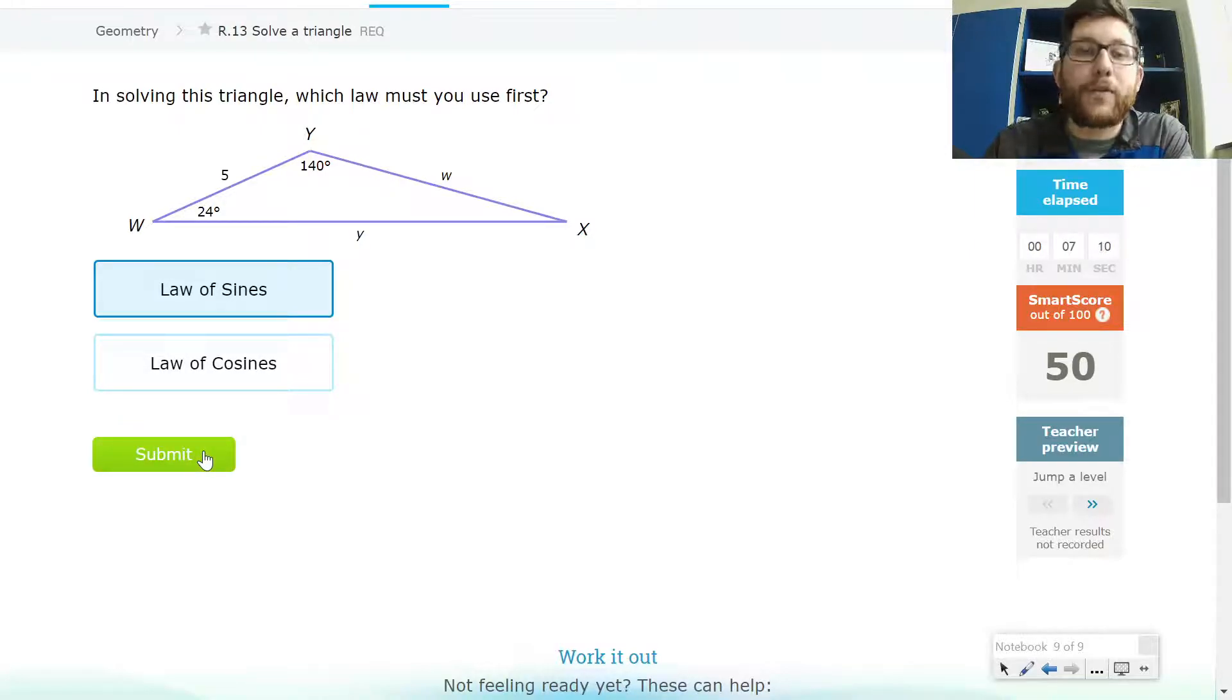So largely, rule of thumb, if you've got two or more angles, that's going to be Law of Sines. If you've got two or more sides, generally that's going to be Law of Cosines.